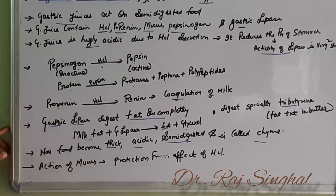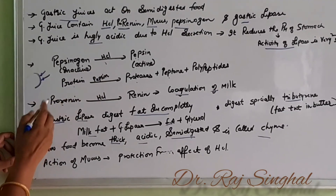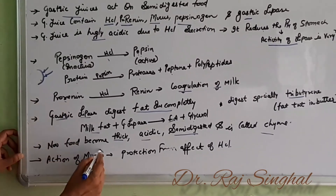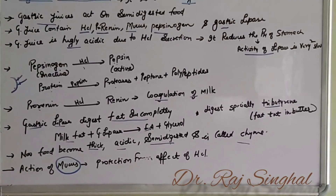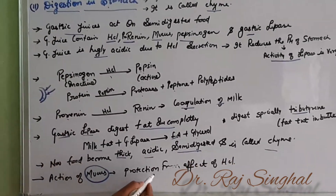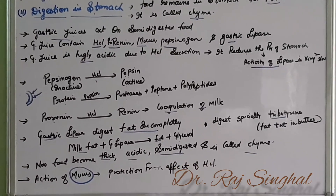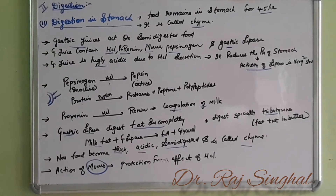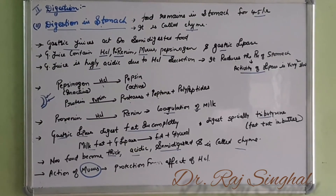HCl can damage the wall of the stomach. To protect the stomach wall from the action of enzymes and HCl, a layer of mucus produced by goblet cells forms a coating on the outer wall of the stomach. Thus, the digestion of protein is the main step in the stomach. After this, the food passes to the intestine.